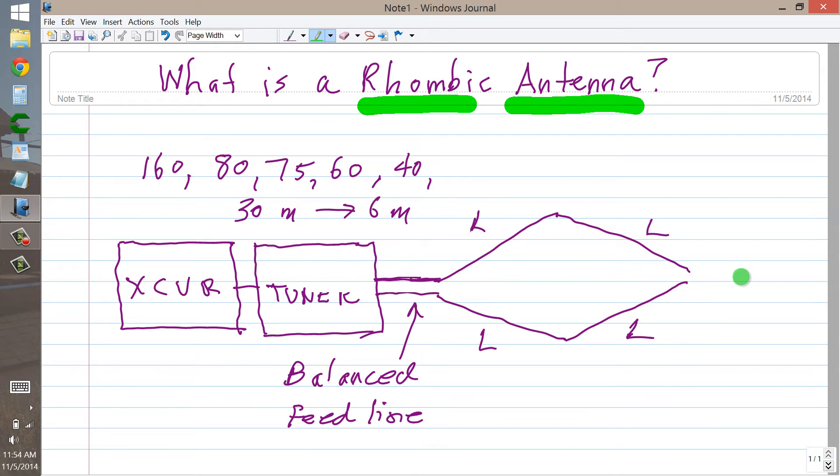if you make the angles and lengths just so, you'll get this massive bi-directional pattern. Now if you add a non-inductive resistor right here of approximately 600 ohms, and if it has sufficient power dissipation capability to literally dissipate half of the power coming out of your radio. So if you run 600 watts output from your radio, this should be a 300 watt resistor.